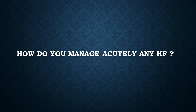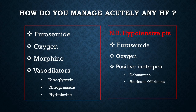Question: How do you manage acutely any heart failure? You start with Lasix (furosemide) because they are acutely fluid overloaded. Then give them oxygen and morphine. You can also start nitroglycerin drip, IV nitroprusside, or IV hydralazine. These three drugs are vasodilators that decrease preload and blood pressure — so in patients with low blood pressure, do not give vasodilators. In hypotensive patients, along with oxygen and diuretics, in the ICU setting you can start IV positive inotropes like dobutamine, amrinone, or milrinone. Note that nitroprusside is less commonly used because of the risk of cyanide toxicity.